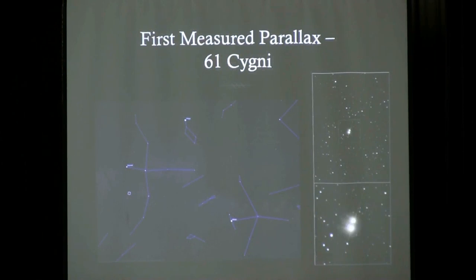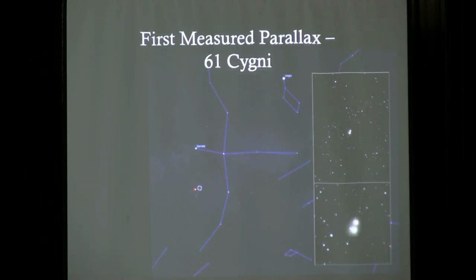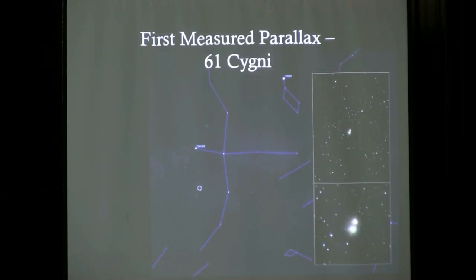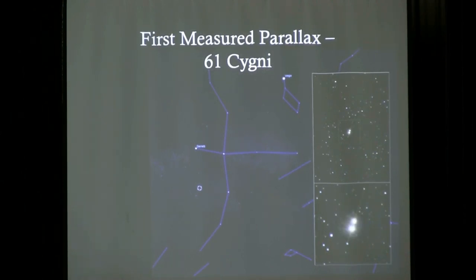The first directly measured parallax of a star was of 61 Cygni, a double star system just off the tail of Cygnus the Swan. This star system is relatively close to us and also has a high proper motion — it visibly moves across the sky over time. You can see the parallax shift as Earth orbits the Sun, and the proper motion as the system itself travels through space. This first successful parallax measurement was made in the 1830s.